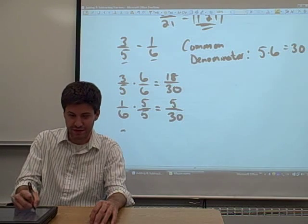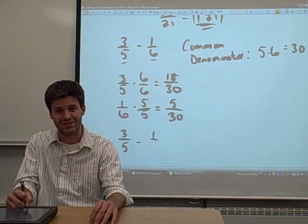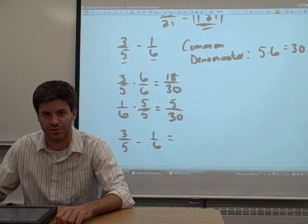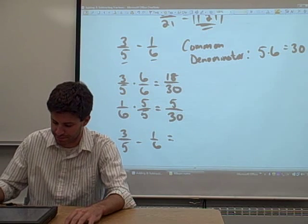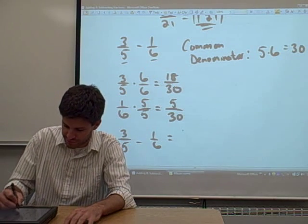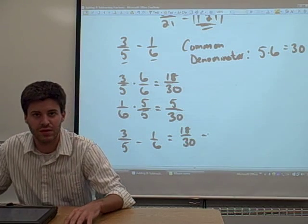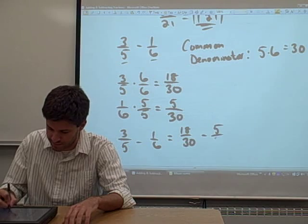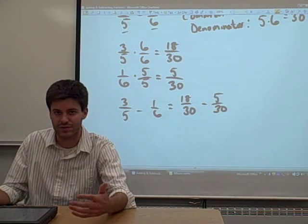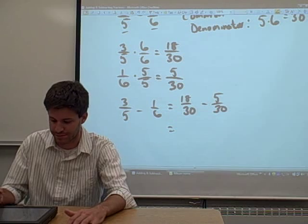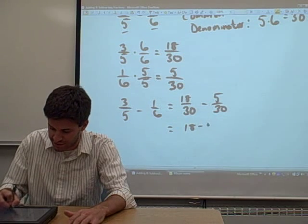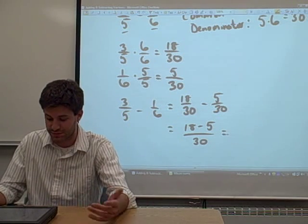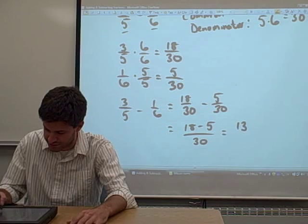So what we've done is we've taken this problem, 3 fifths minus 1 sixth, and we've converted it into a problem that has a common denominator so we can actually solve it. 3 fifths we found was 18 over 30, 1 sixth we found was 5 over 30. There we go. We have a common denominator, so we can subtract these fractions really easily. In the numerator we just have 18 minus 5, in the denominator we just keep the 30. 18 minus 5 is 13.